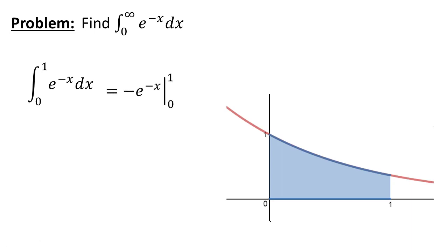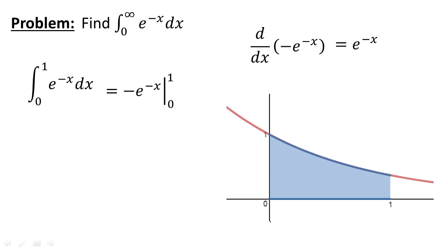So if we write that out, the anti-derivative of e to the negative x is going to be negative e to the negative x. If you're not sure how we got there, we could do it systematically using u-substitution, but perhaps an easier way in this case is to guess at the function and then take the derivative of our guessed anti-derivative and just make sure it matches our initial function. So our guess was negative e to the negative x as the anti-derivative. If we take the derivative of that, we use the chain rule and we just get back to e to the negative x.